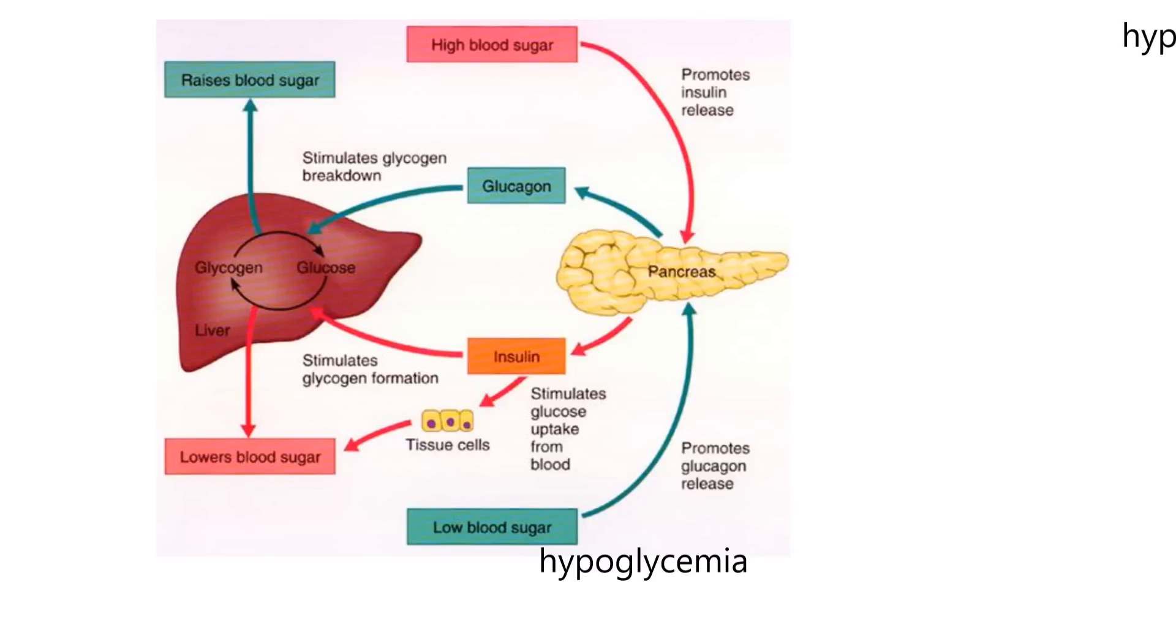Now watch my laser pointer. That's going to be sensed by the pancreas. And the pancreas is going to release glucagon. Well, because remember now, we want to raise blood sugar. So glucagon goes by the blood into the liver. And it stimulates glycogen breakdown. Glycogen is a storage form of glucose. So then you would get glucose coming out here, and it raises blood sugar levels. That's the actions of glucagon.